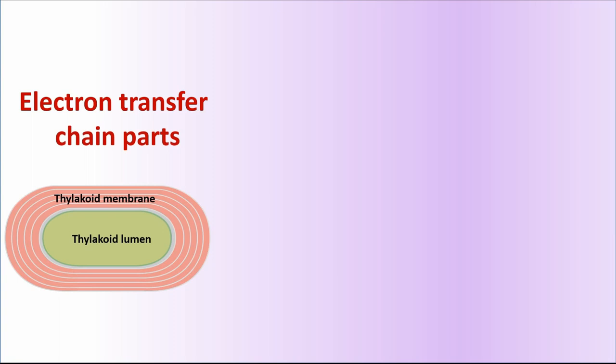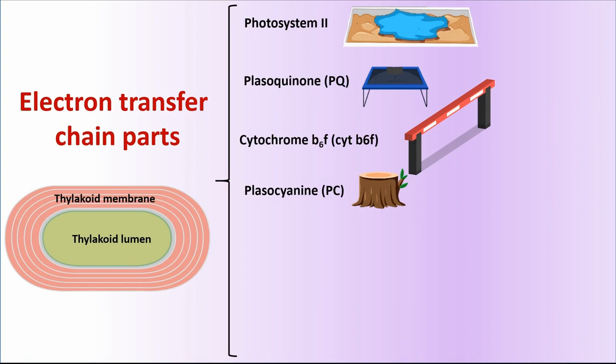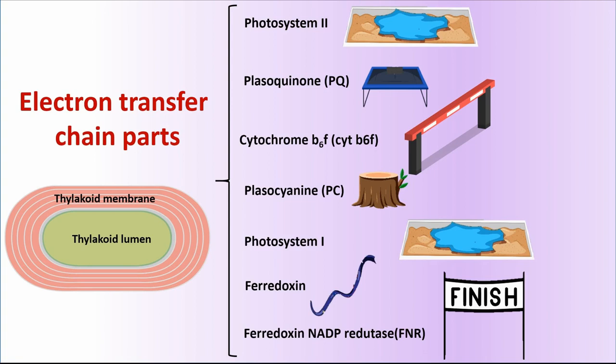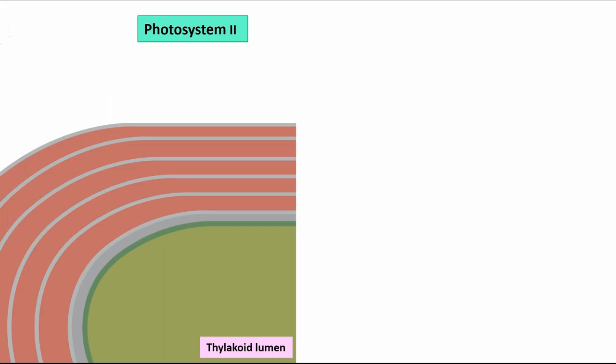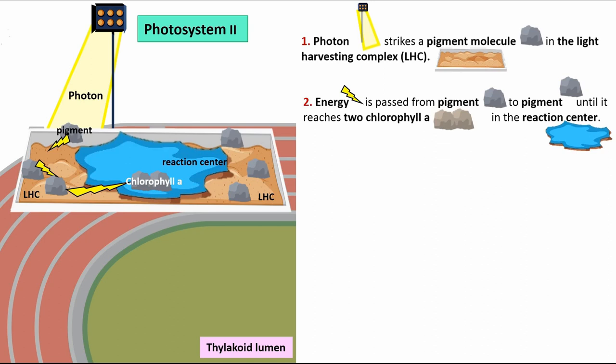Reaction center composition includes a pair of chlorophyll A and a primary electron acceptor. Electron transfer chain parts are: Photosystem 2, Plastoquinone, Cytochrome B6F, Plastocyanin, Photosystem 1, Ferredoxin, and Ferredoxin NADP reductase or FNR. In Photosystem 2, a photon strikes a pigment molecule in the light harvesting complex. Then energy is passed from pigment to pigment until it reaches chlorophyll A in the reaction center.